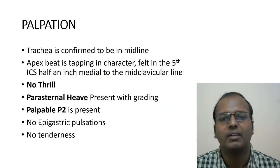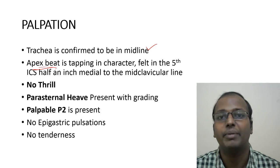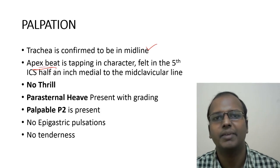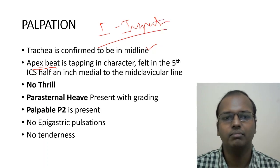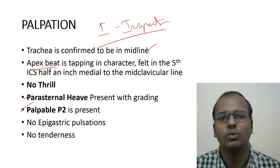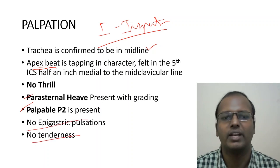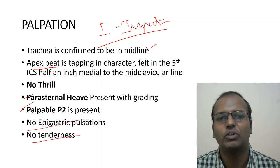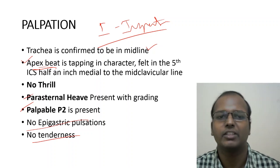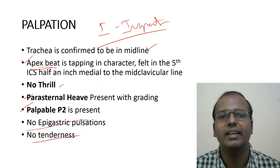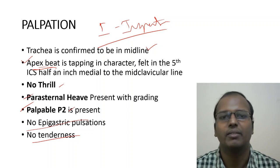In palpation, confirm the trachea is at the midline. Note the apex beat — you inspect for the apical impulse and palpate for the apex beat. Also assess parasternal heave, palpable P2, epigastric pulsation, and tenderness. The three important things to note in palpation are: apex beat, thrill, heave, and palpable P2.